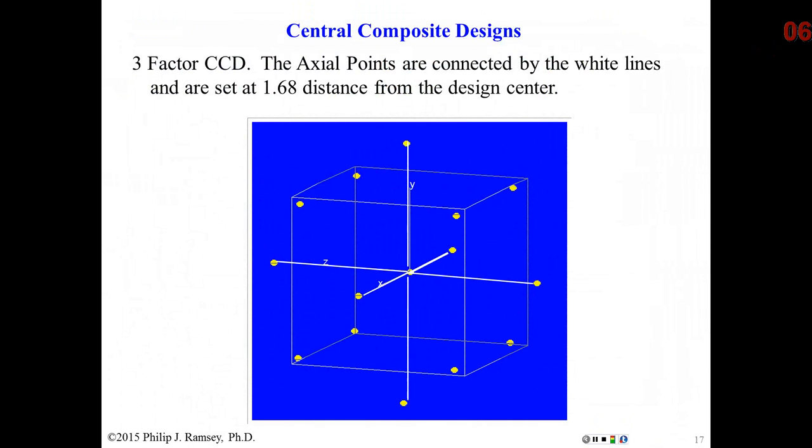On slide 17 is an example of what a CCD looks like. When you see the corner points, basically these are your standard factorial points. The design requires at least one center point. Notice that the axial points are right on the coordinate axes that define the system, hence the term axial points. In terms of fitting squared terms, these axial points are positioned to fit quadratic terms, and that is their only purpose.